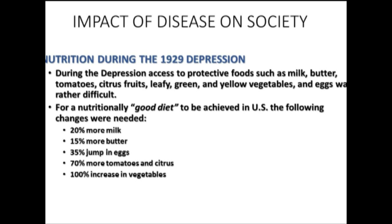During the Great Depression of 1929, the dietary quality of Americans was seriously compromised. A government assessment using home economists and dietitians examined key foods such as milk, butter, tomatoes, and citrus fruits. They concluded that to achieve a good diet, Americans needed 20% more milk, 15% more butter, a 35% increase in egg consumption, 70% more tomatoes and citrus fruit, and a 100% increase in vegetables — all products that were being rationed and limited at the time.